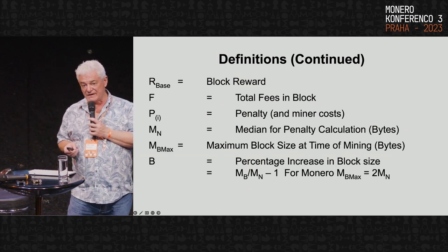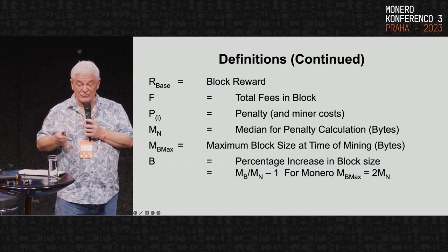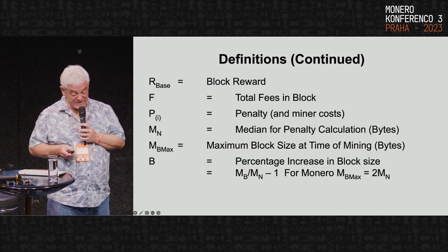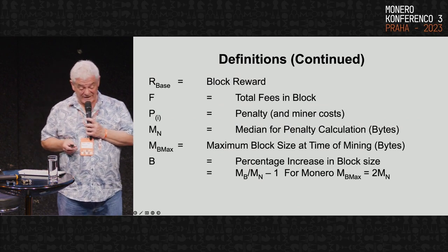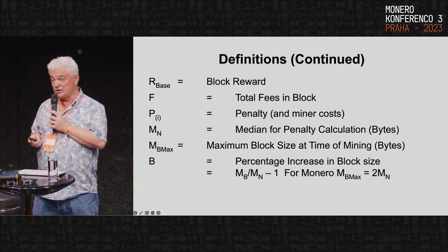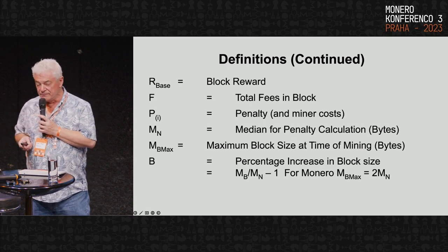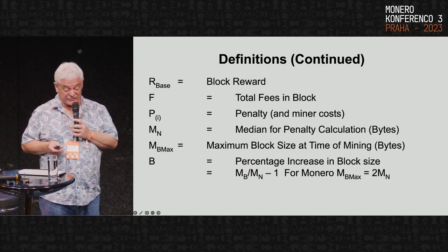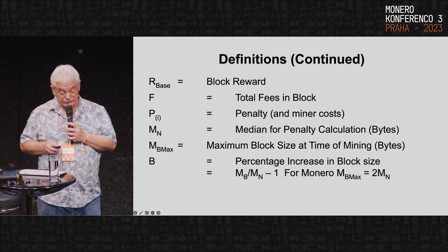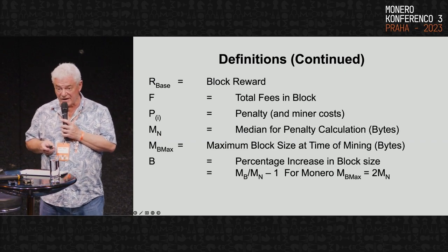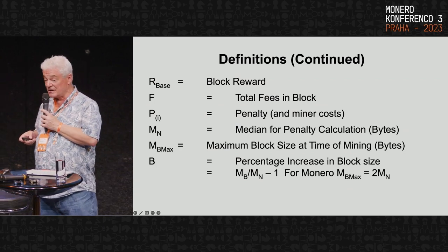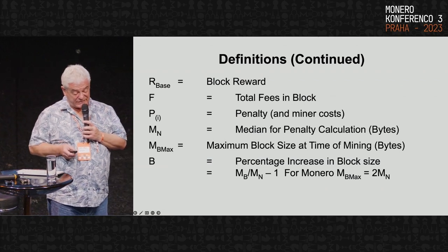The main thing I found is that this penalty term is also proportional to the block reward, so you can build in a market cost for the miner. In Monero, the big one is of course the penalty and the penalty calculations. The next concept is the maximum block size at a point in mining — how big a miner can grow the block size at that point in time. In Monero it's like twice the median MN for the penalty calculation. In other coins it's a static number. And then there's B, the percentage increase in the block size. For example, a 300,000-byte block increased by 10% — 30,000 bytes — means B equals 0.1. The maximum B equals 1 in Monero, as required by the protocol.